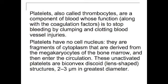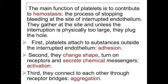In circulation, unactivated platelets are biconvex discoid — lens-shaped structures 2 to 3 micrometers in their greatest diameter. The main function of platelets is to contribute to hemostasis, which is the process of stopping bleeding at the site of interrupted endothelium. First, platelets attach to substances outside the interrupted endothelium — this is called adhesion. Then they change shape, turn on receptors, and secrete chemical messengers — this step is called activation. The third step, aggregation, is where they connect to each other through receptor bridges.